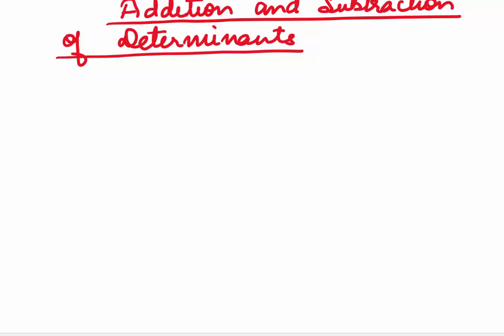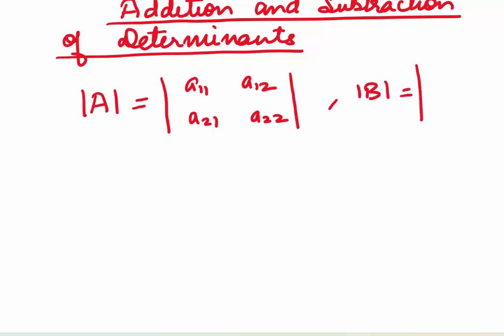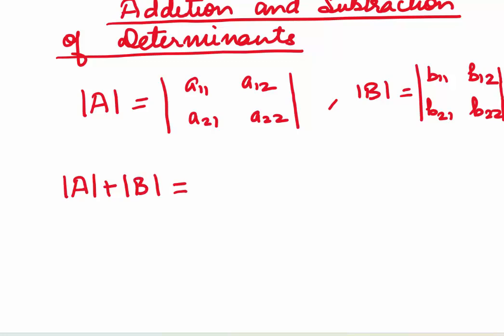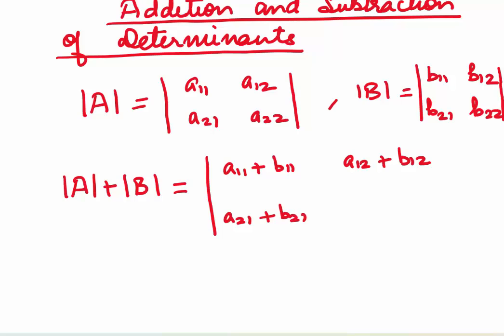Coming to how determinants are added and subtracted. Let us say we have a determinant A of order 2 with elements A11, A12, A21, A22, and a determinant B with elements B11, B12, B21, B22. Addition of determinants means we will be adding the corresponding elements — determinants of same order only can be added. So A11 is added to B11, A12 to B12, A21 to B21, and A22 to B22. This is how determinants are added.